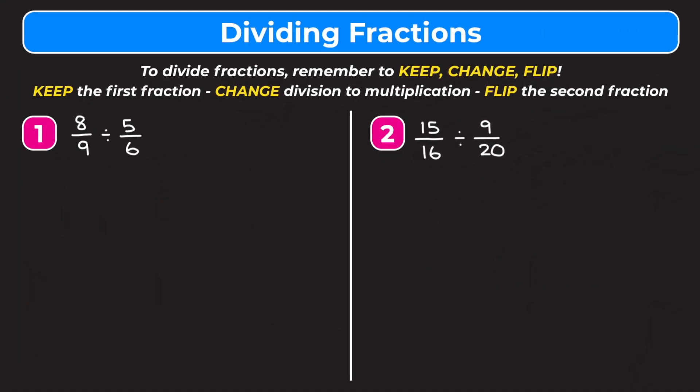In this video we're learning how to divide fractions. At the top of our screen it says to divide fractions — remember to keep, change, flip. What that means is we're going to keep the first fraction as it is, change the division to multiplication, and flip the second fraction. So basically when you're dividing fractions, you're multiplying the first fraction by the reciprocal of the second, and reciprocal just means flip the fraction upside down. Let's jump into number one.